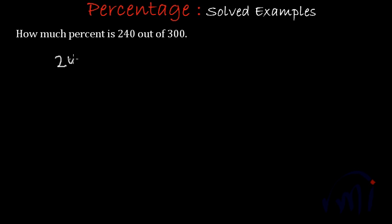In fraction we will write it as 240 by 300. And to convert this fraction into percentage we will multiply it by 100. And how to solve it next? Yes, these zeros will cancel these zeros, 3 1s are 3, 3 8s are 24 and 0. So this will be equal to 80%.